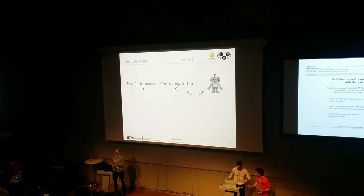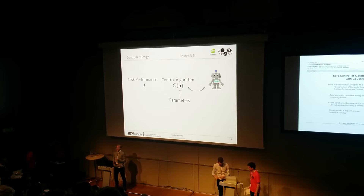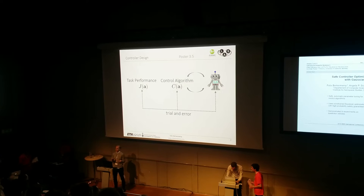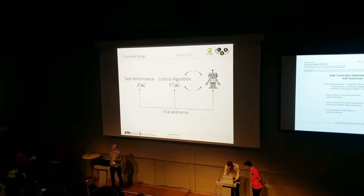Since the first controller typically will have poor performance, we include tuning parameters into our algorithms. Since the task performance implicitly depends on these parameters, this leads to a trial-and-error process where we iteratively select new parameters and evaluate the performance on the real system until we find satisfactory parameters.